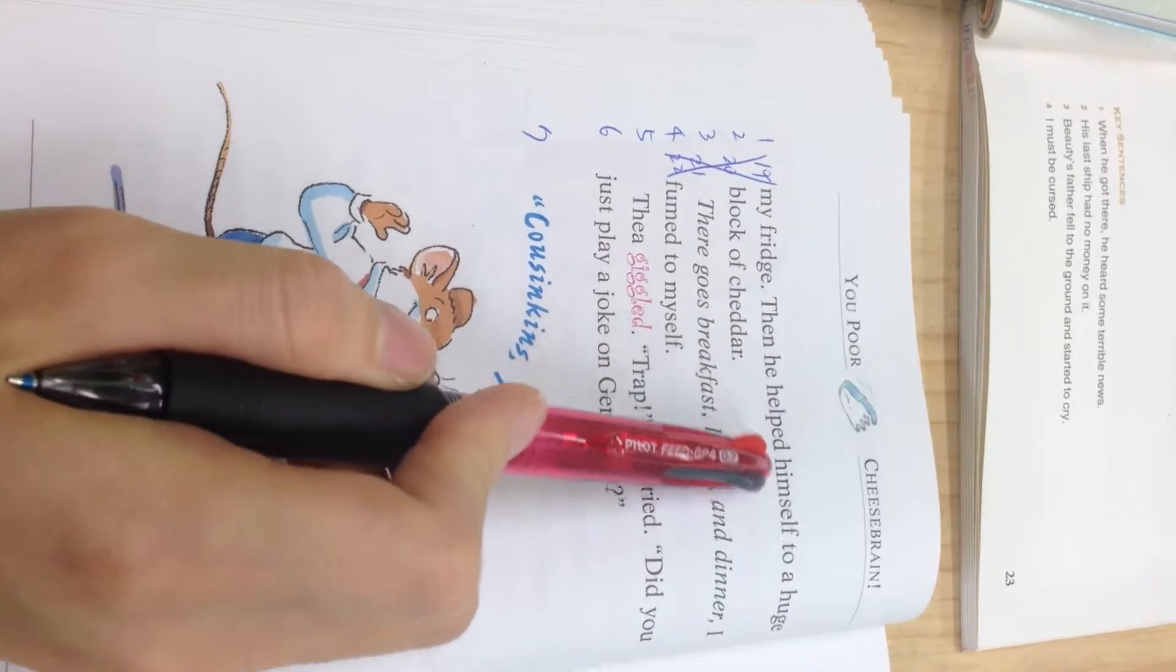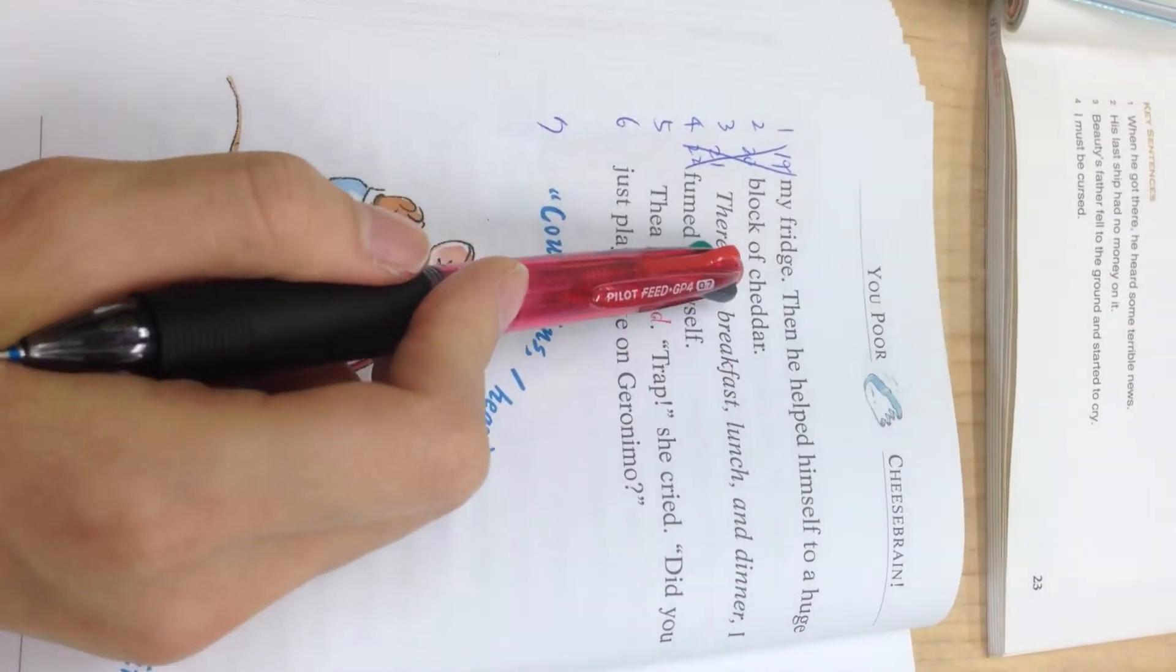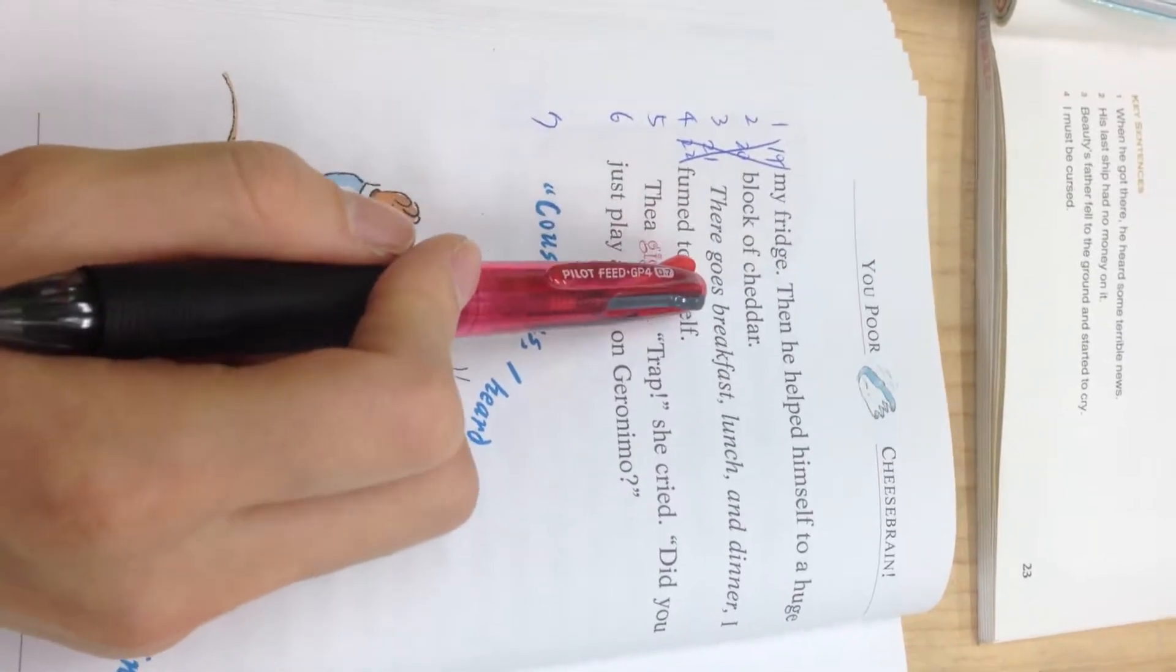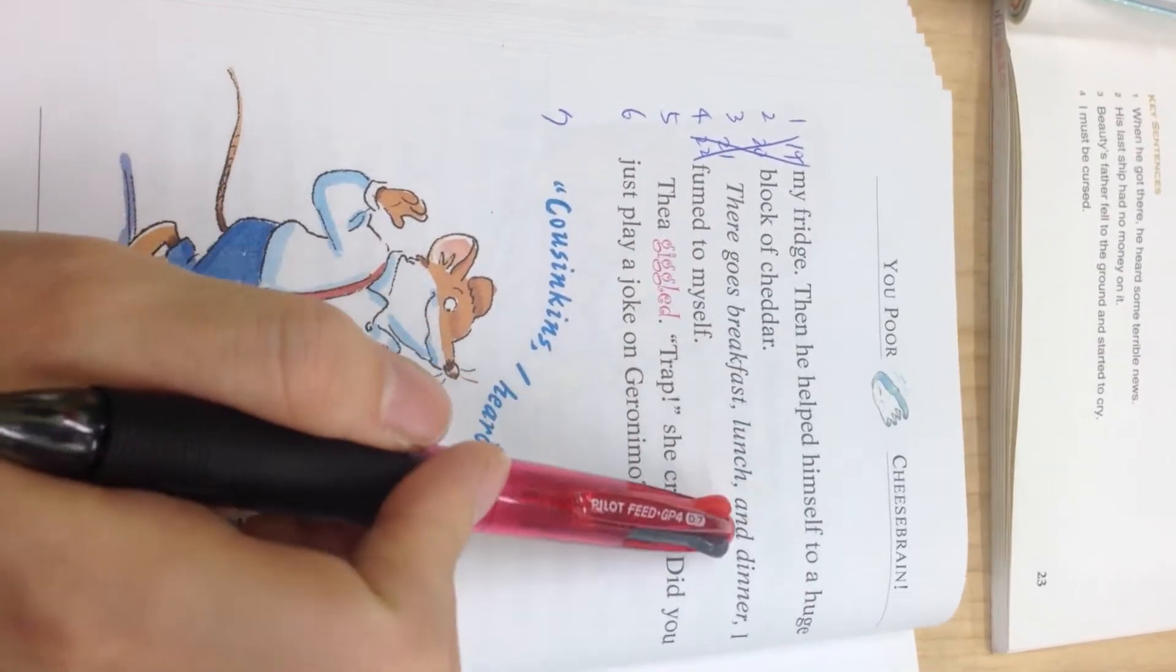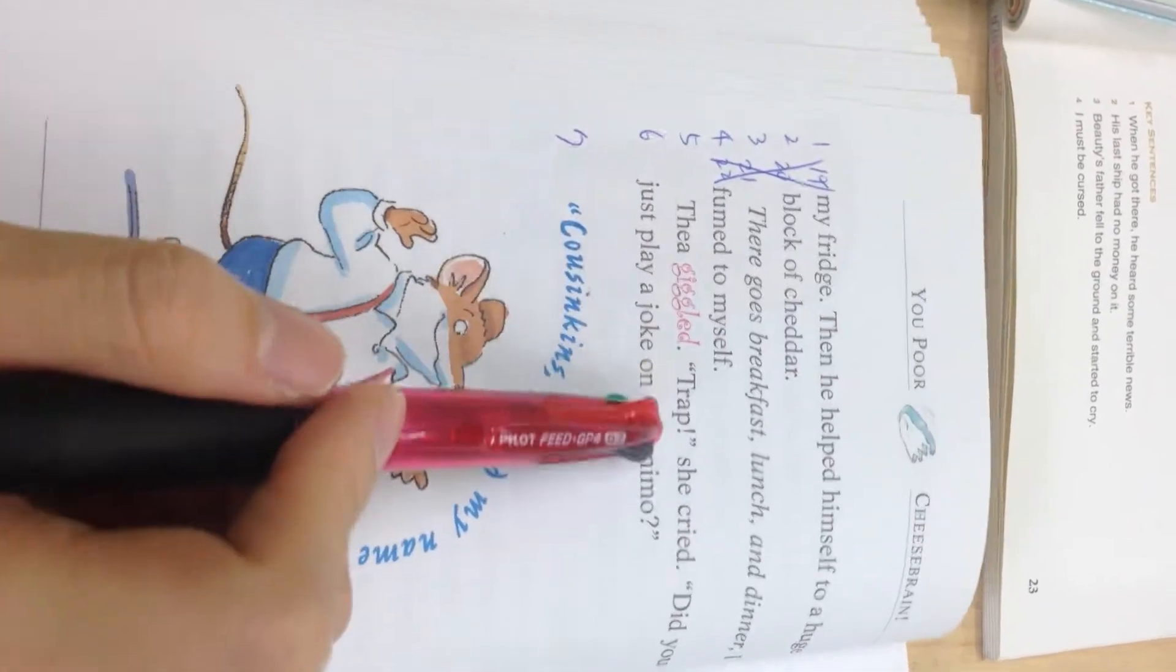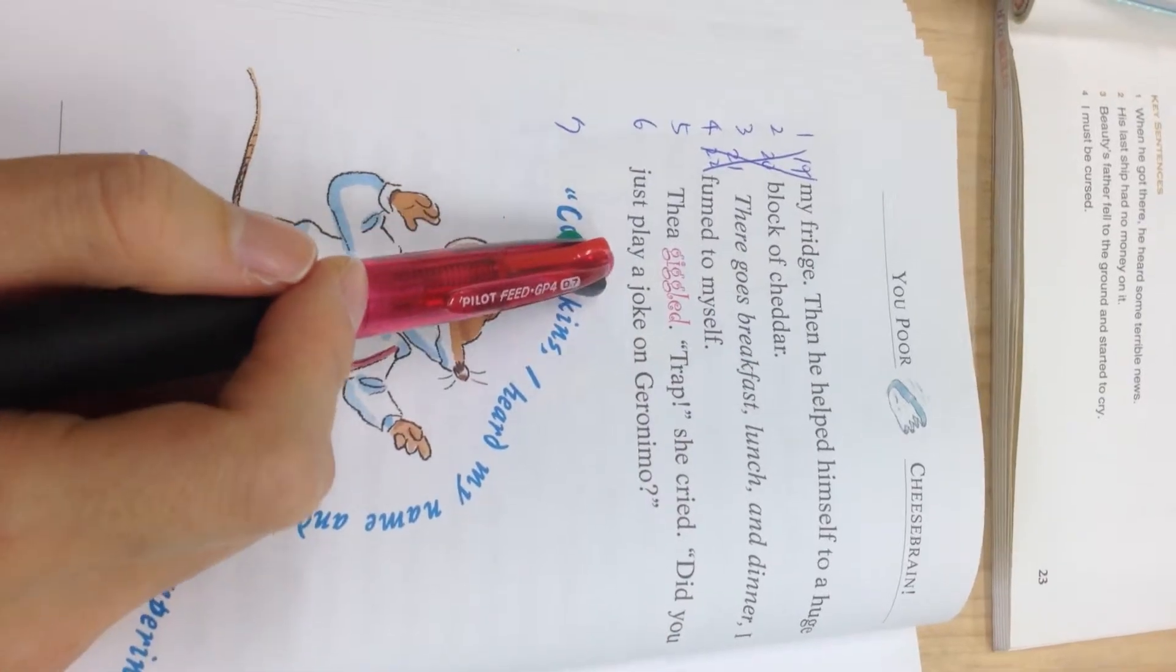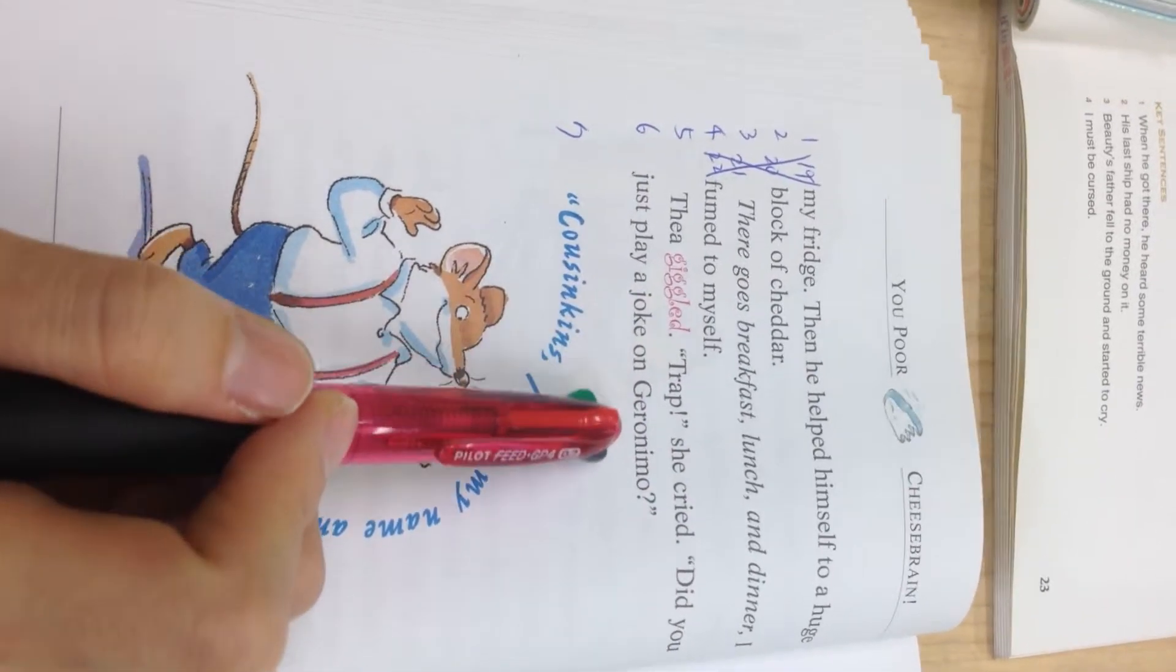Then he helped himself to a huge block of cheddar. There goes breakfast, lunch, and dinner. I fumed to myself. Thea giggled. Trap, she cried. Did you just play a joke on Geronimo?